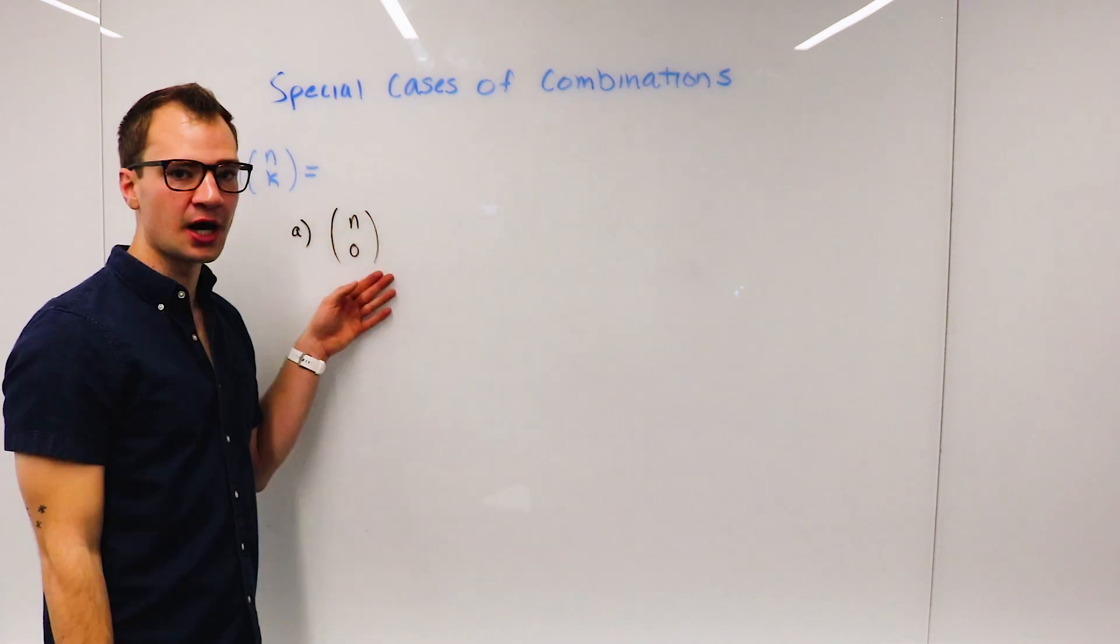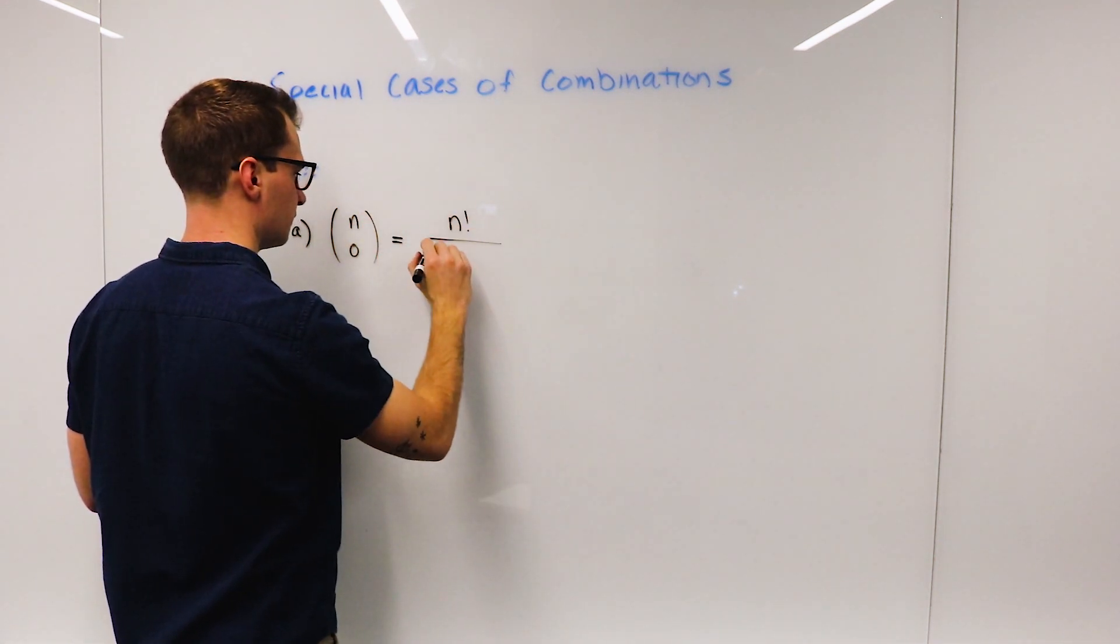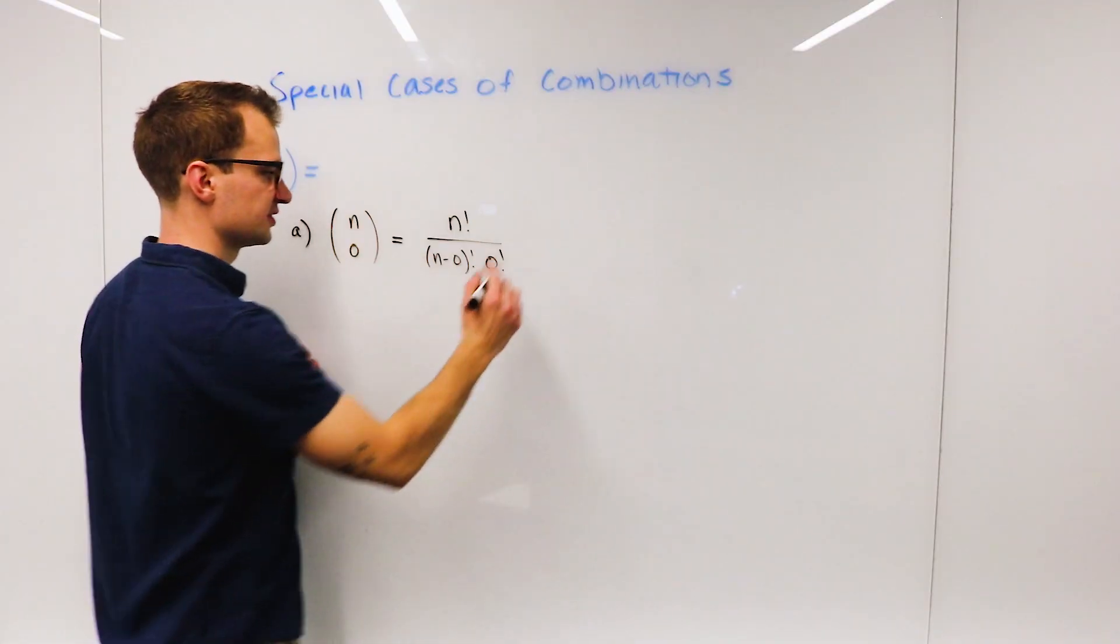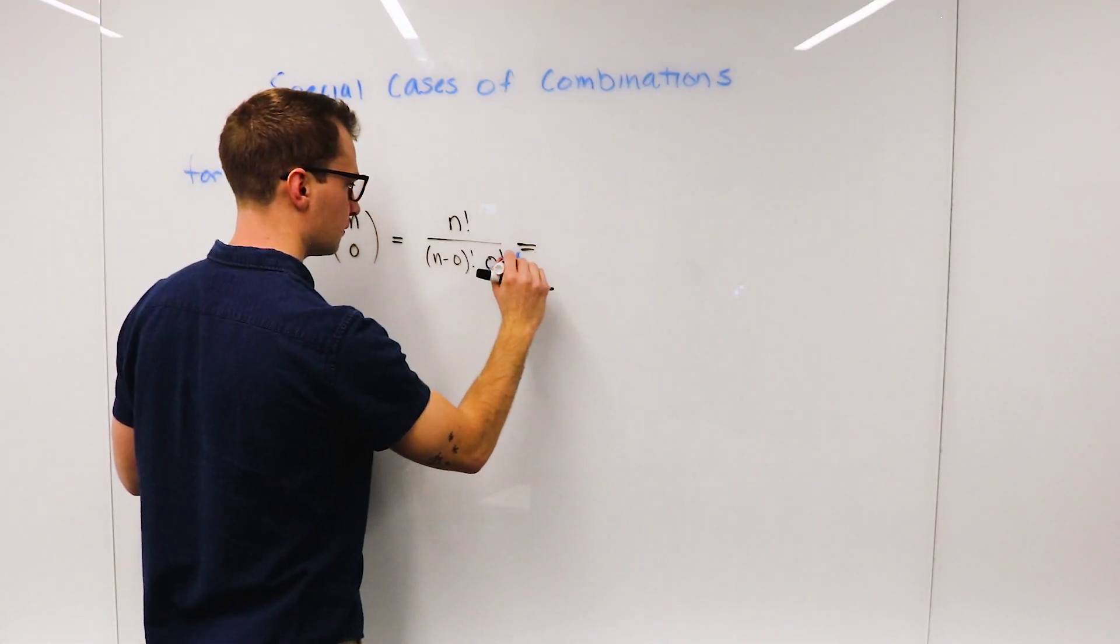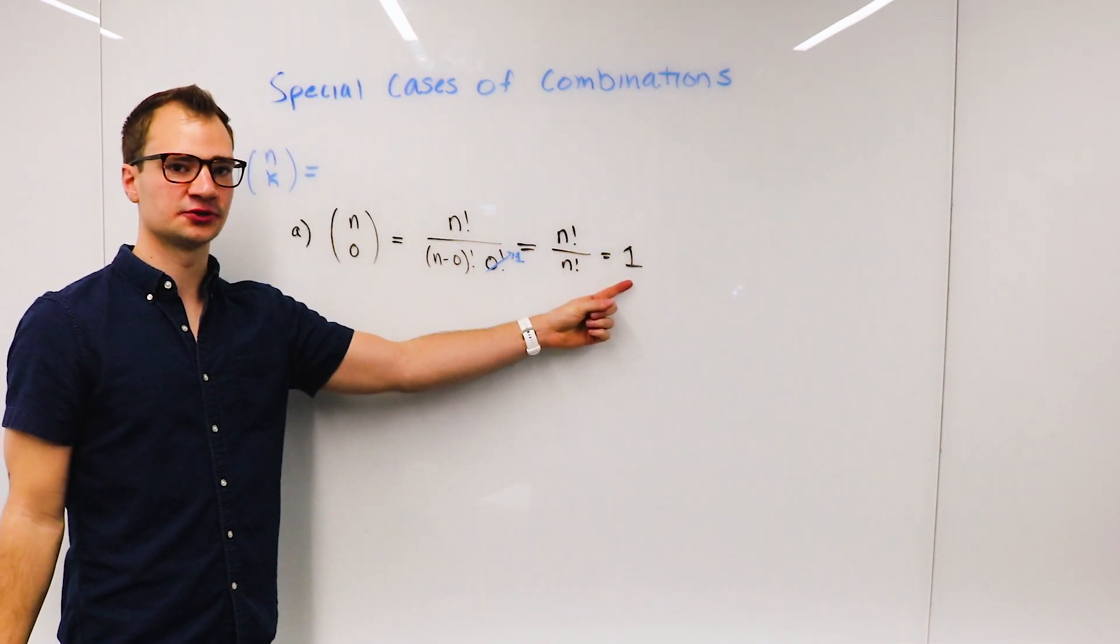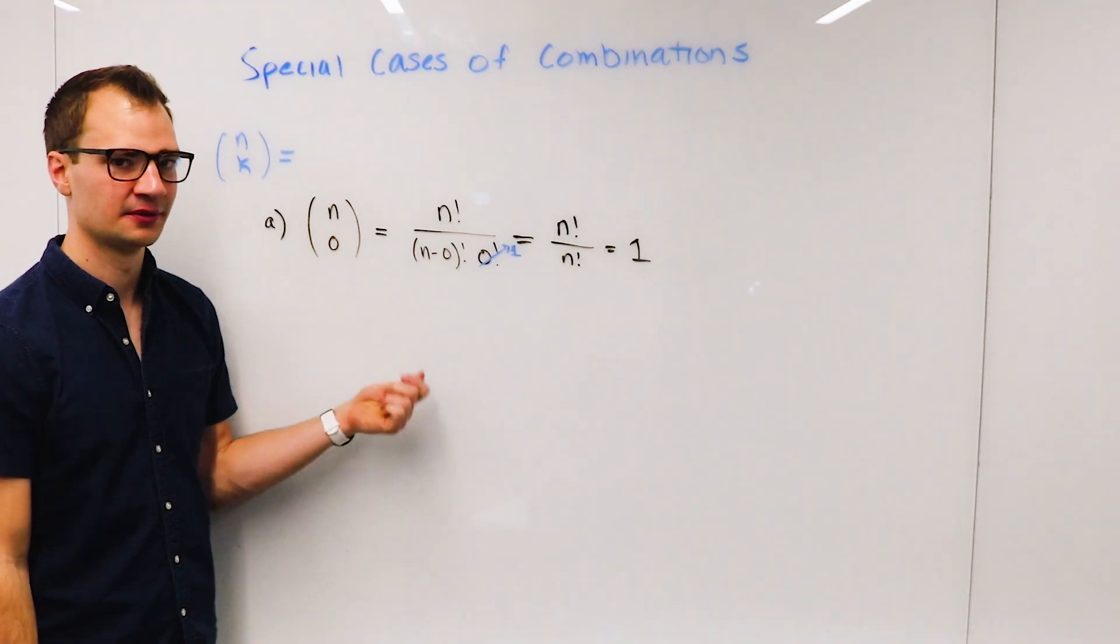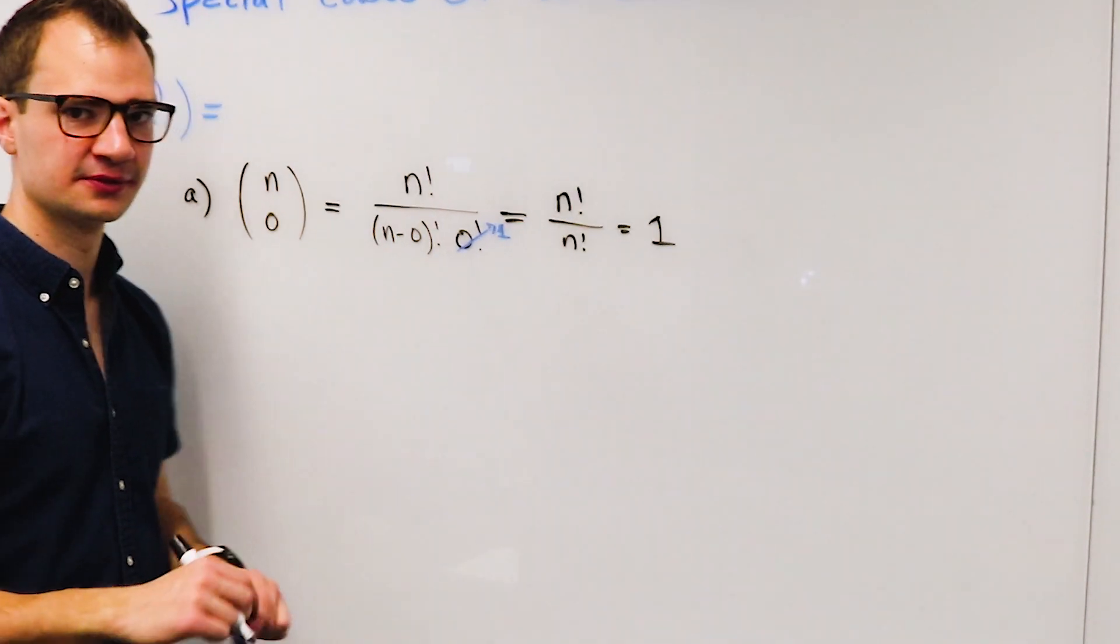If we choose zero objects out of n, this is just going to simplify to 1. So there's only one situation in which we can arrange zero objects out of n, because we're picking zero objects.